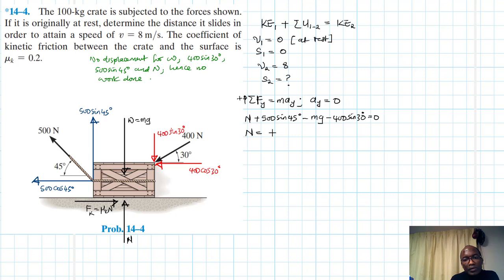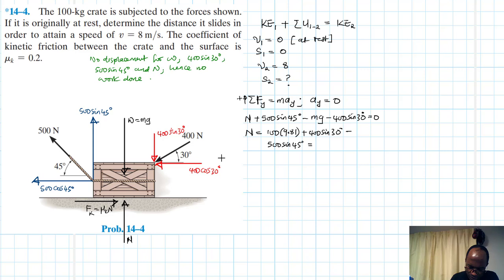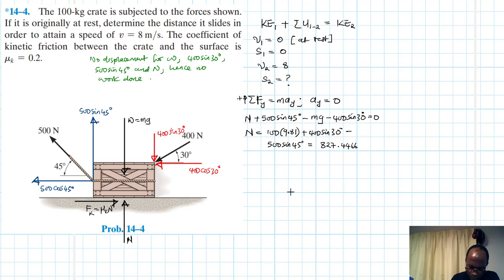Therefore N equals 100 × 9.81 plus 400 sin 30 minus 500 sin 45, which gives us N = 827.4466 N.